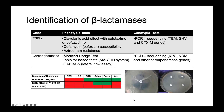There's a table that summarizes at a high level the susceptibility profiles we see with various types of beta-lactamases. For non-ESBL TEM and SHV-type enzymes, we're going to see resistance to penicillins and first-generation cephalosporins. For our ESBLs, we'll see resistance to those two plus third-generation cephalosporins and aztreonam.